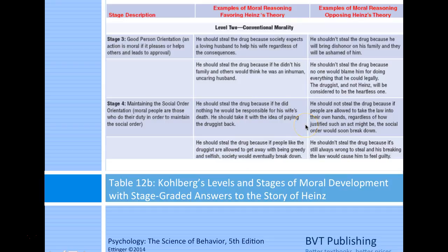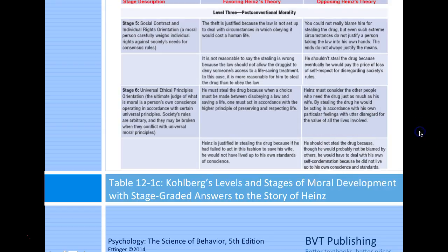Against Heinz in stage four: if people are allowed to take the law into their own hands regardless of how justified the act might be, the social order would break down; or it's always wrong to steal and his breaking the law would cause him to feel guilty.